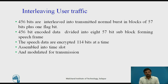The purpose of interleaving user traffic data is to improve signal quality by distributing the effects of fading among several mobile subscribers receiving data simultaneously from base stations. The 456-bit user traffic data is interleaved into transmitted normal bursts in blocks of 57 bits plus 1 flag bit. The 456-bit encoded data is divided into eight 57-bit sub-blocks forming a speech frame, encrypted 114 bits at a time, assembled into a time slot, and modulated for transmission.